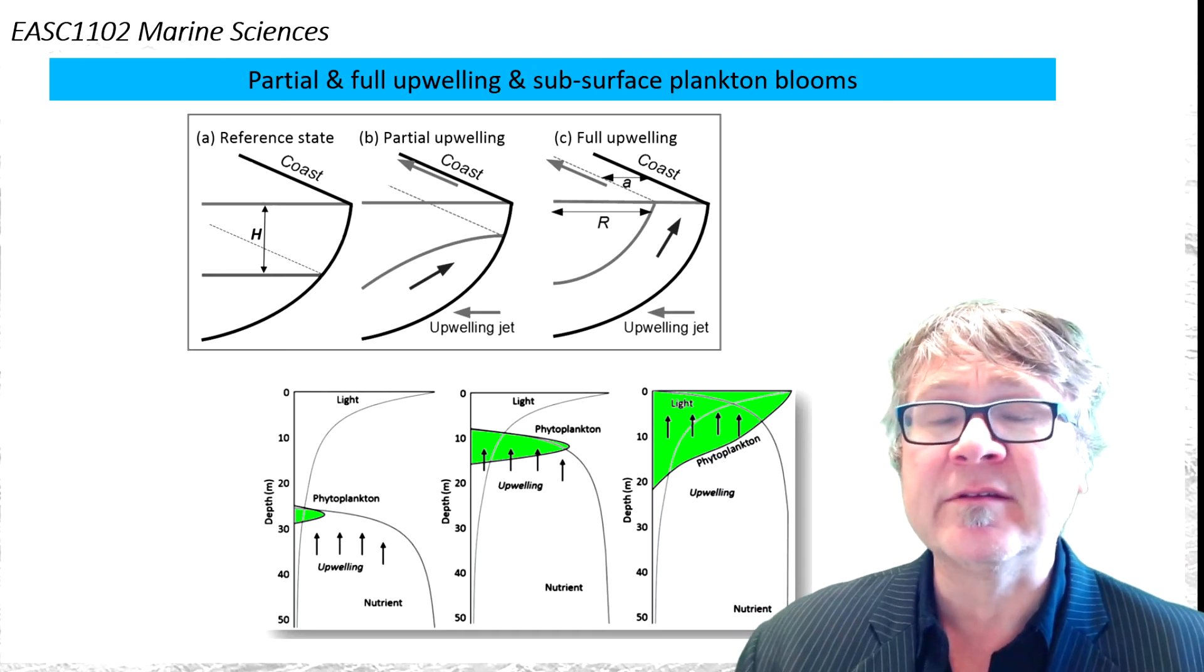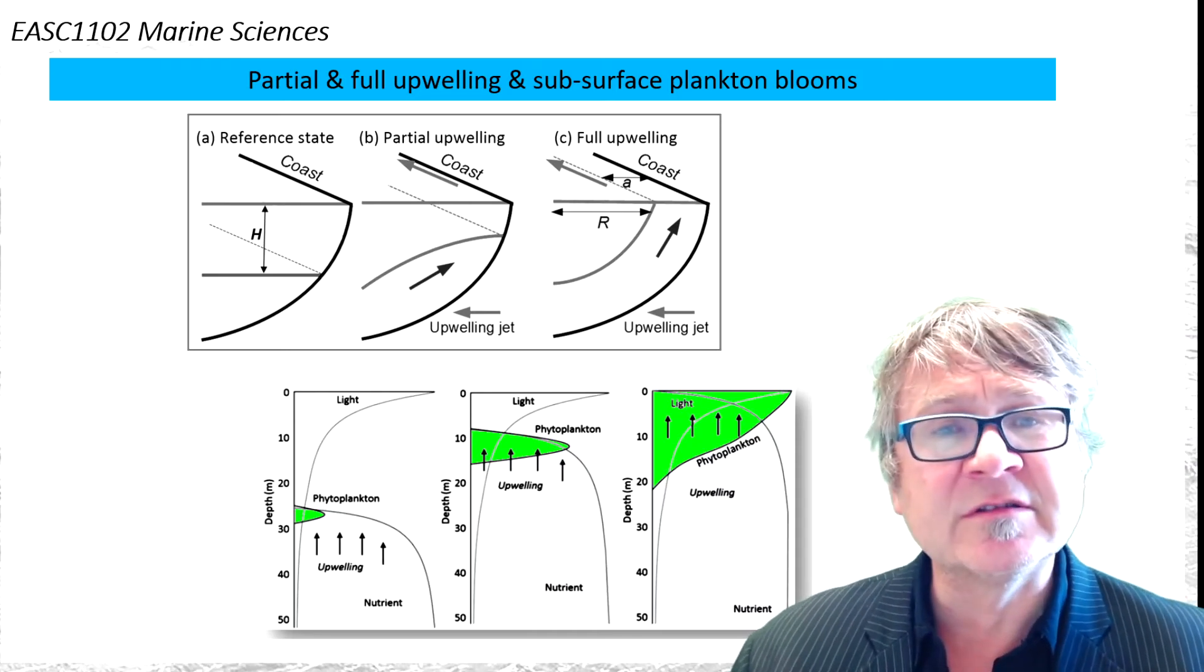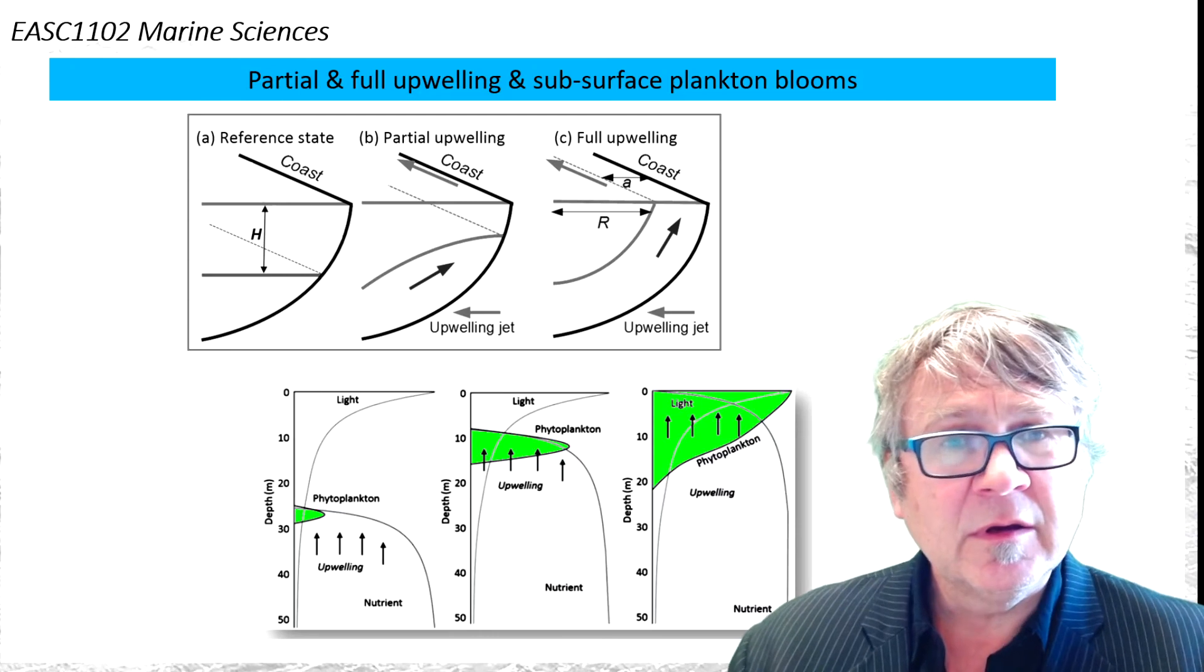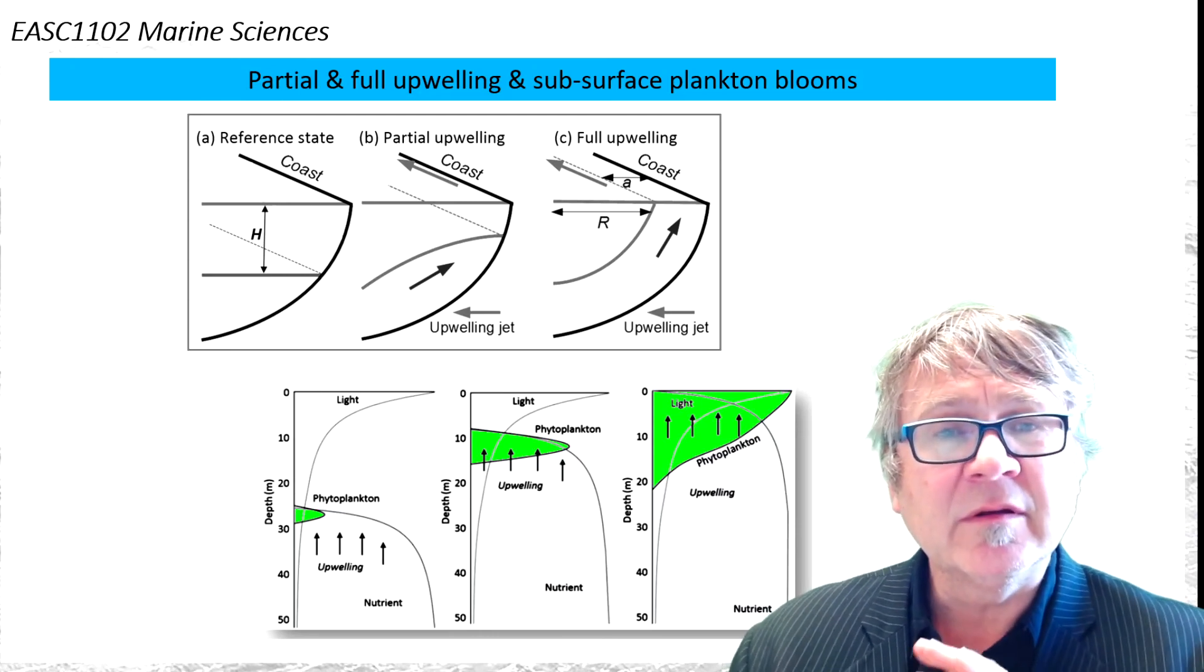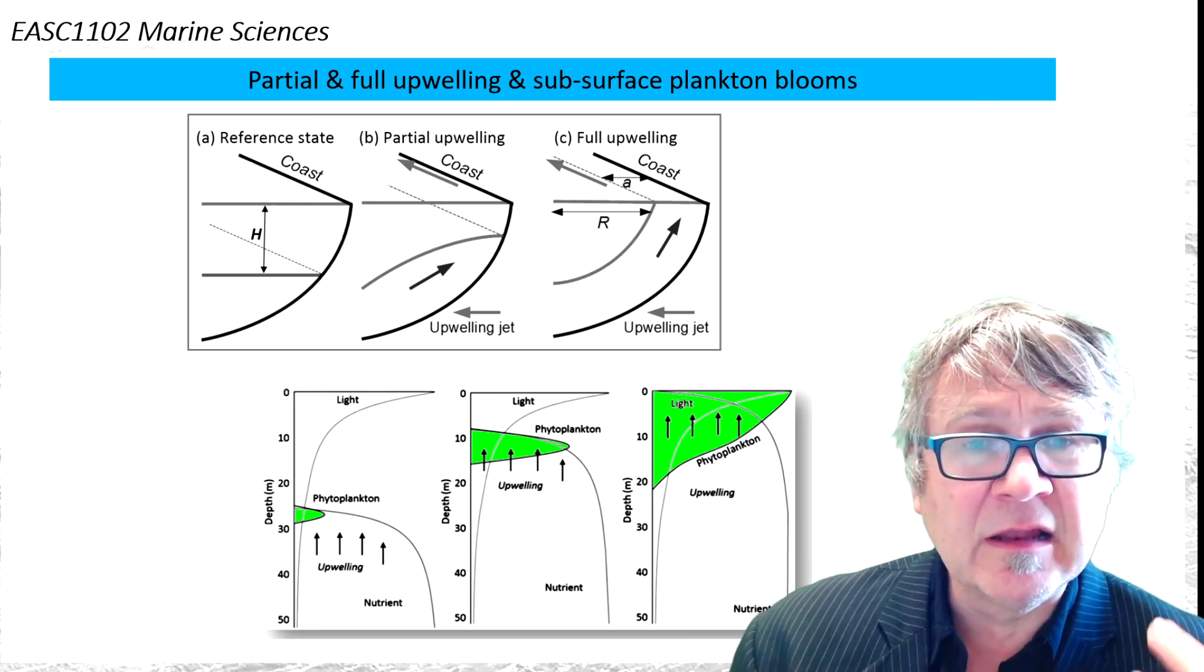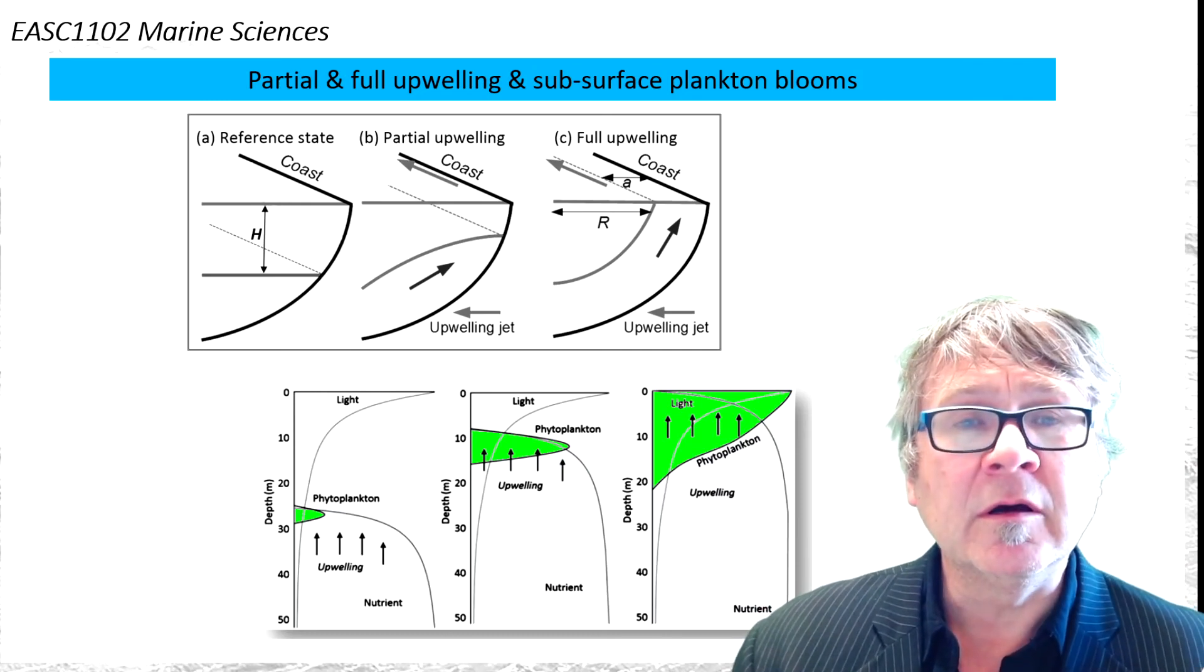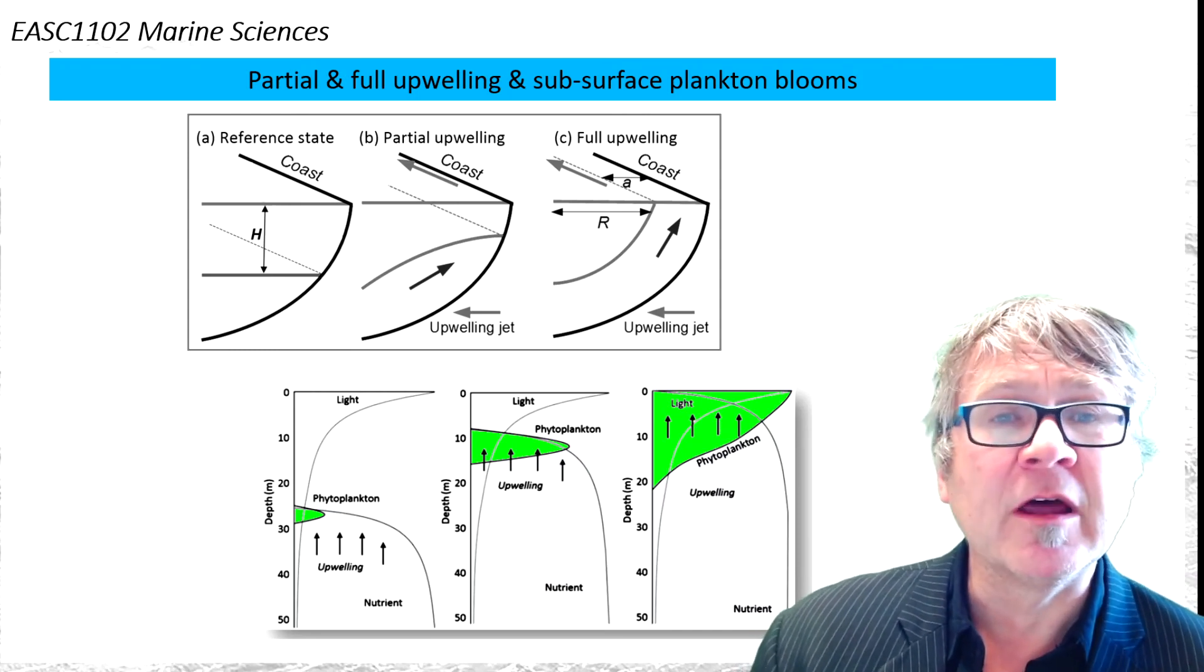Only the full upwelling is what you can identify. But that's also the one that has the strongest plankton signal, because light intensity is the largest near the surface. So you have maximum photosynthesis for full upwelling.